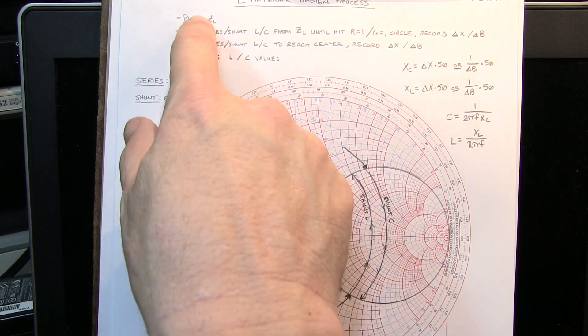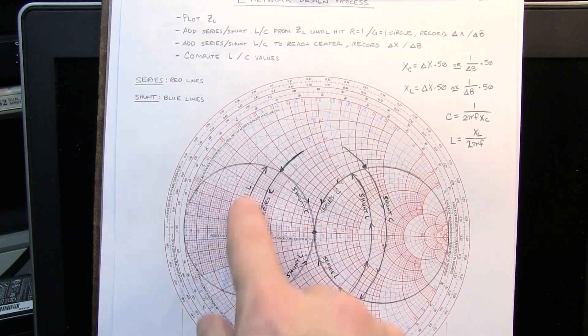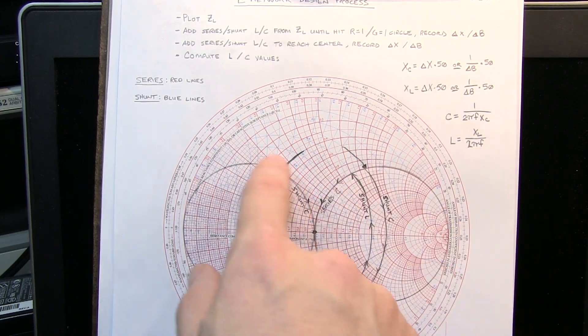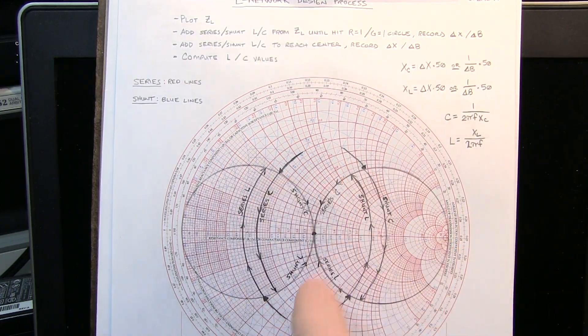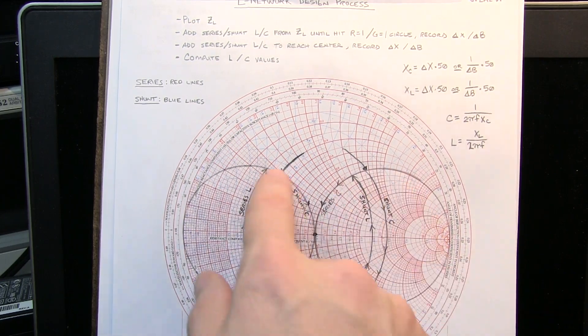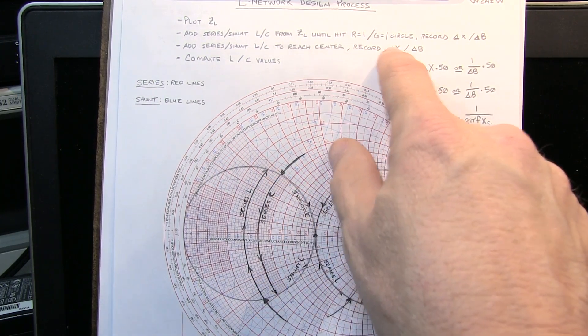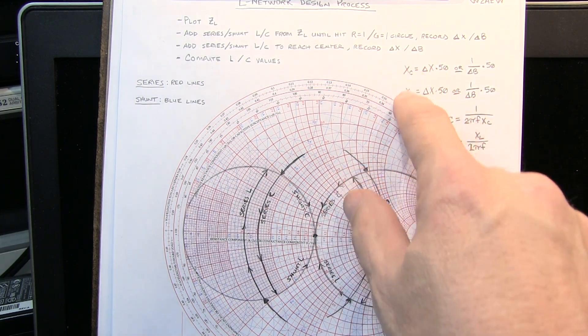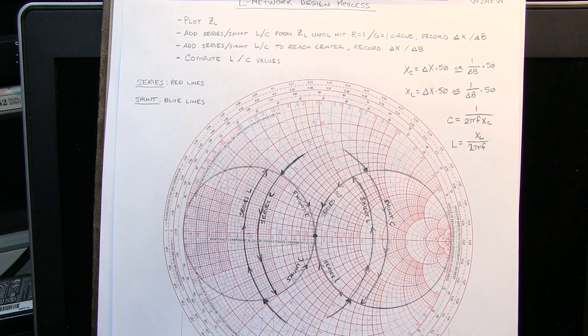Here's our design process. We first plot the load impedance wherever it is on the Smith chart. And then working from that, we want to add a series or shunt L or C to rotate along the constant resistance or constant conductance circles until we reach either the unity resistance circle or the unity conductance circle. Then we record how far we've moved in either reactance or susceptance to get there. Then we add a series or shunt inductor to rotate along the unity resistance or unity conductance circle to reach the center. And record how far we went in that case. And then from those movements or the lengths of those arcs in either reactance or susceptance, we can then compute the capacitive and inductive reactance of the components at our operating frequency. And there you can use that to compute the actual capacitor and inductor values.